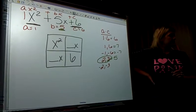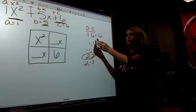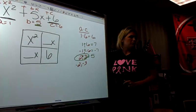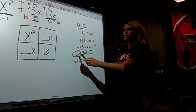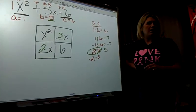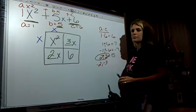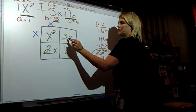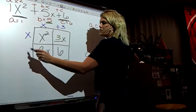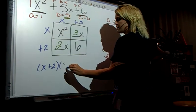So now it's 2 and 3, so I'm going to put 2x and 3x. Once you've filled in your box, then you go and look. X squared splits up as x and x. X times what is 3x? Plus 3. X times what is 2x? Plus 2. My answer is x plus 2 times x plus 3.